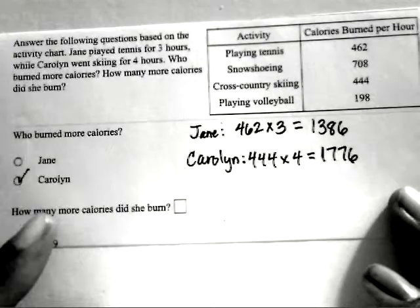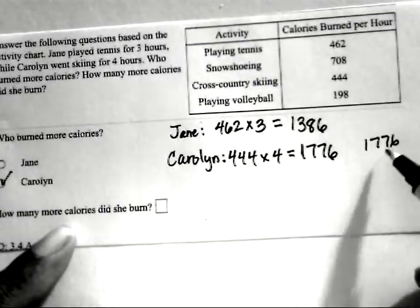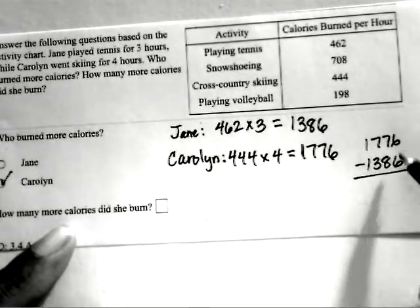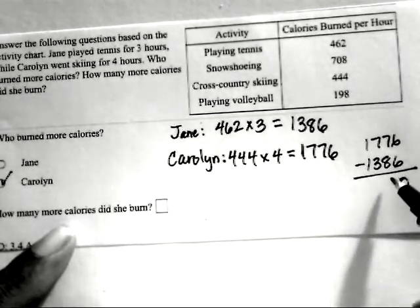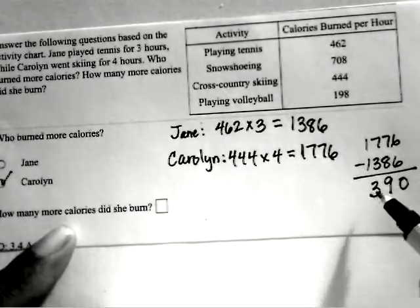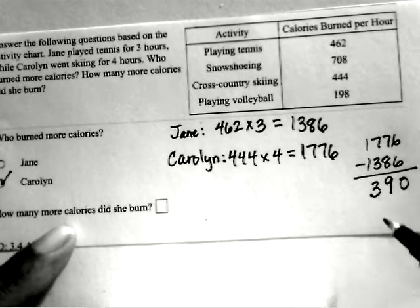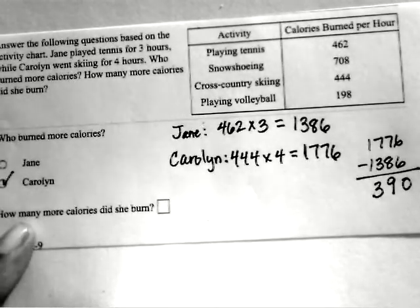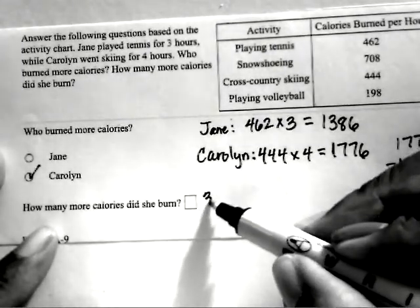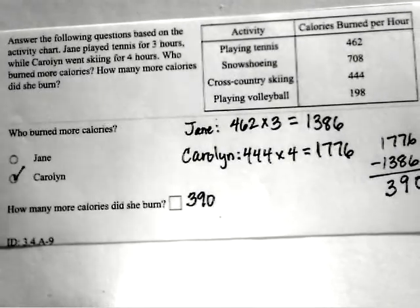And how many more calories did Carolyn burn? So we subtract 1,776 minus 1,386, in this case, this will be 390. So Carolyn burned 390 more calories than Jane did.